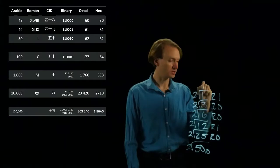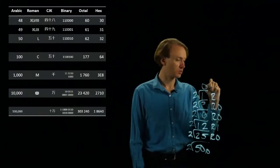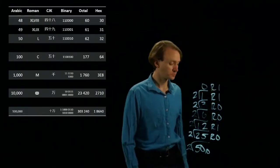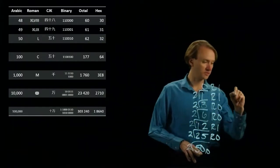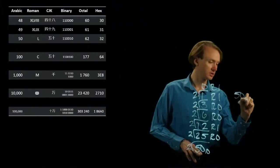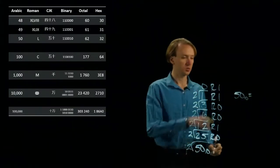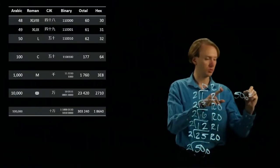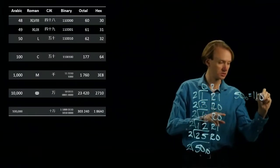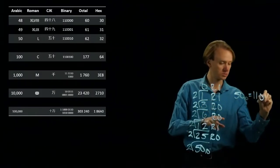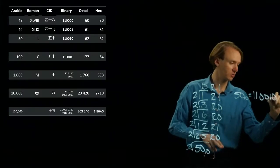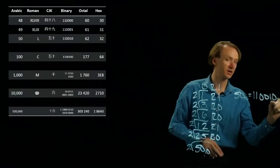And 1 divided by 2 is 0 remainder 1. So the number 50 in decimal is equal to 1, 1, 0, 0, 1, 0 in binary.